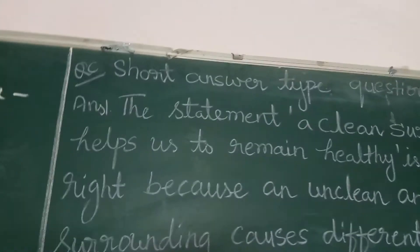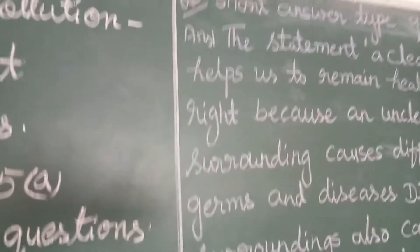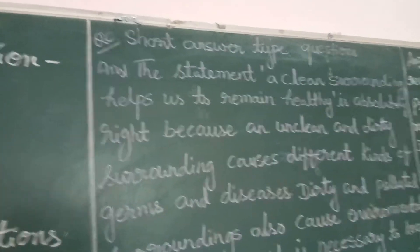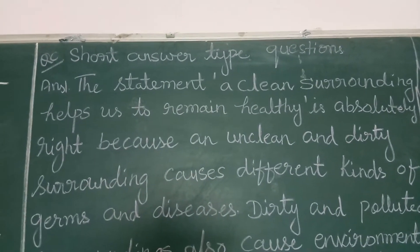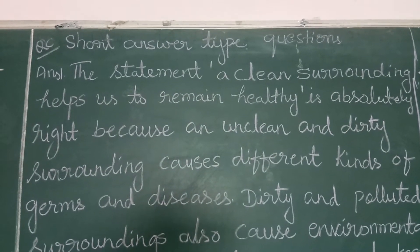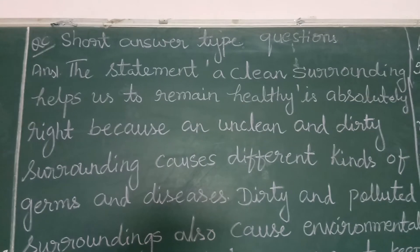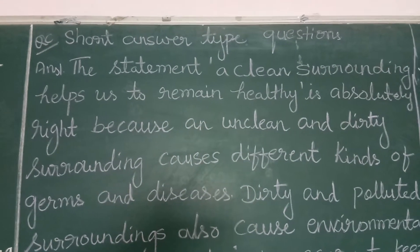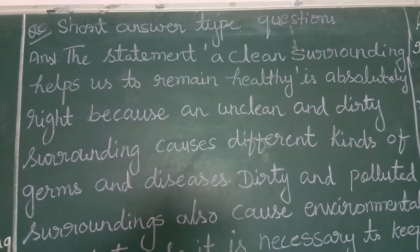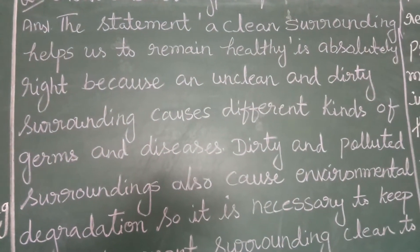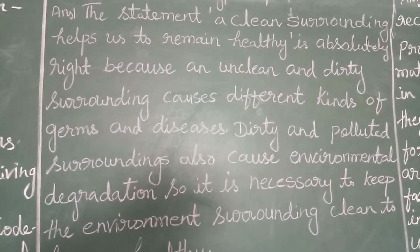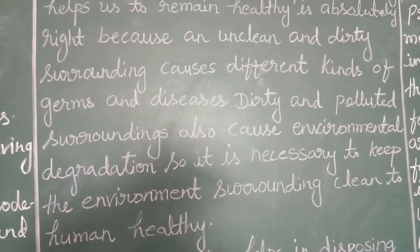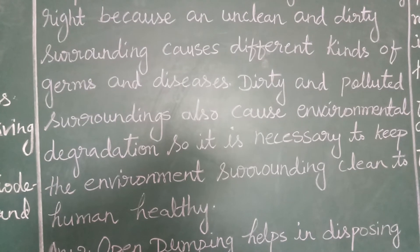Question section C: short answer type questions. Answer number 1: a clean surrounding helps to keep humans healthy — explain the statement. Answer: the statement is absolutely right because an unclean and dirty surrounding causes different kinds of germs and diseases. Dirty and polluted surroundings also cause environmental degradation. So it is necessary to keep the surrounding clean to stay healthy.